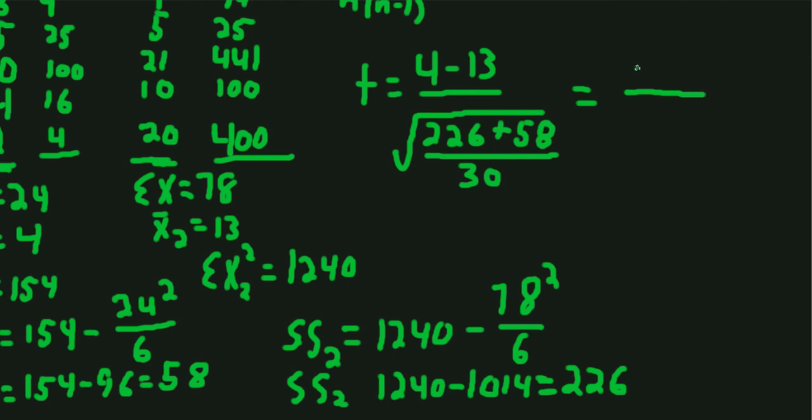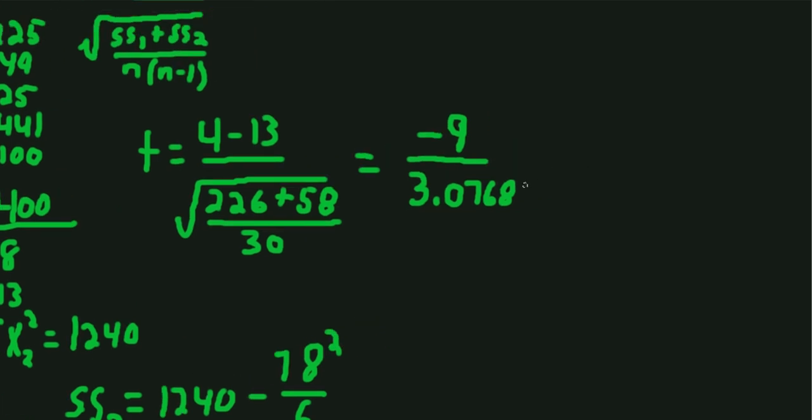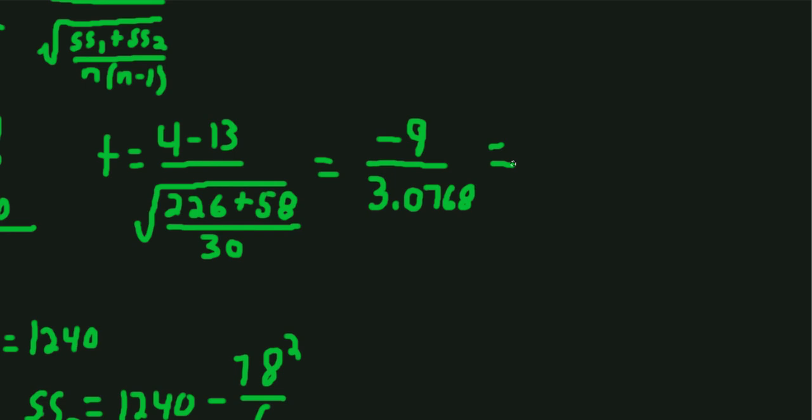So we have negative 9 in the numerator divided by 226 plus 58 divided by 30. Then you take the square root and you'll get 3.0768. That's our estimate of the error. So it looks like we have almost 3 times as much difference between the means as we would expect to find simply by sampling error. So we take negative 9 and divide it by 3.0768, and we get negative 2.9.